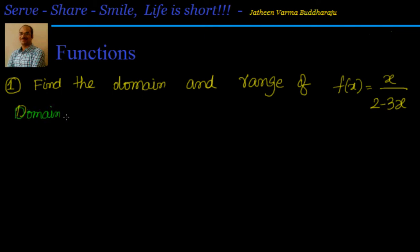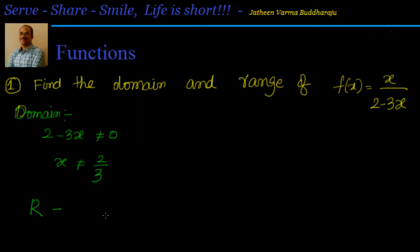For the domain, 2 - 3x cannot be equal to 0. That means x is not equal to 2/3. So the domain is nothing but R minus {2/3}.